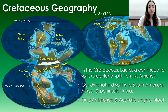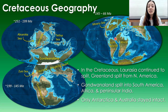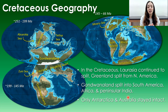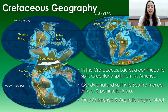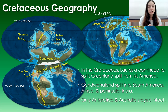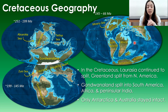In the Cretaceous, Laurasia continued to split — Greenland split from North America — and Gondwanaland split into South America, Africa, and peninsular India. The only ones staying in contact were Antarctica and Australia, which did not split until after the Cretaceous. Most other modern continents reached their almost present-day configuration during this time. India later moved northward, causing the continent-continent collision that formed the Himalayas.